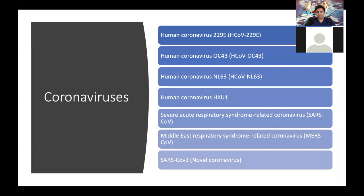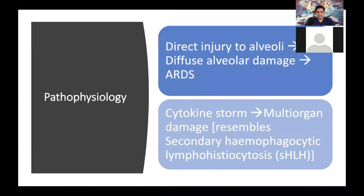This is a list of different coronaviruses. Most of them cause a common cold, but the last three listed here — SARS, which we experienced in 2001; MERS, which Saudi Arabia experienced between 2014 until now; and SARS-CoV-2, the novel one in 2019 — are more severe. The main issue with SARS-CoV-2 or COVID-19 is acute lung injury or acute hypoxemic failure, mainly caused by diffuse alveolar damage, which leads to ARDS.